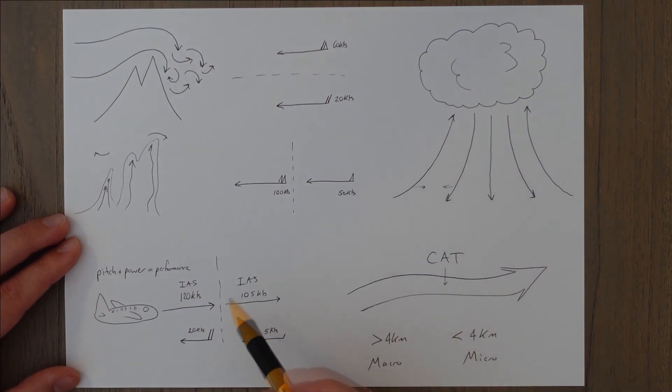And the third main type of turbulence is called CAT, clear air turbulence, and that's the turbulence that's associated with rapidly changing wind speeds as we move into the core of a jet stream.